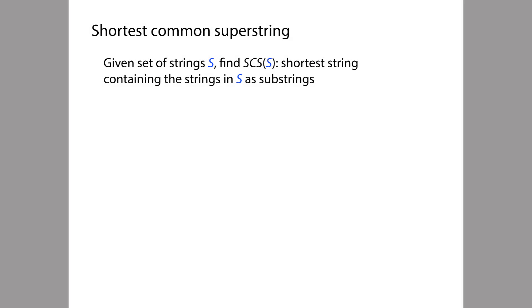We're now at the point where we can formulate a computational problem that, when we solve it, will in turn solve the genome assembly problem. This first formulation won't be perfect, but it'll be a good starting point for our discussion of the assembly problem, kind of in the same way that the naive exact matching problem wasn't perfect but was a good starting point for read alignment. The computational problem is called the Shortest Common Superstring problem, which we'll sometimes abbreviate as SCS.